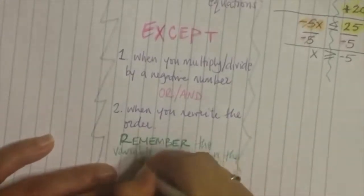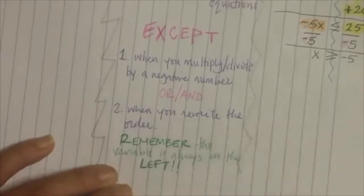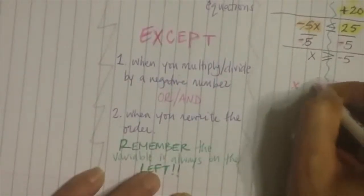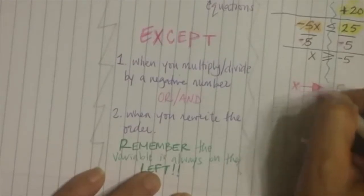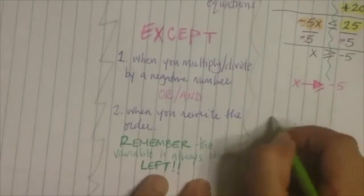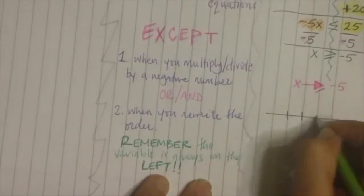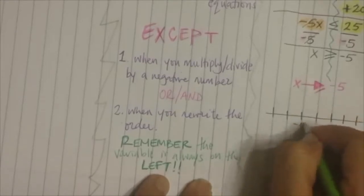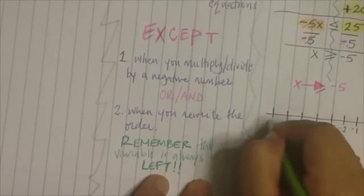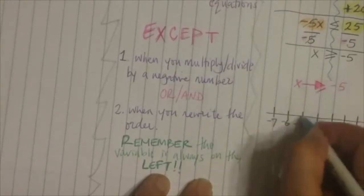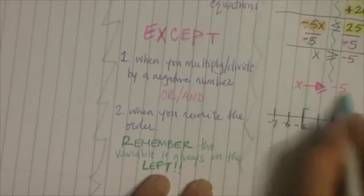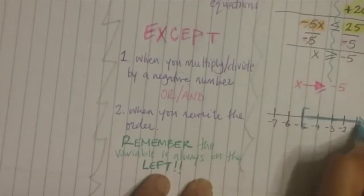Remember, the variable must always be on the left hand side. We have x is greater than or equal to negative 5 — draw an arrow going to the right. When you graph this, the arrow goes to the right. It's going to be a closed circle, and I'm going to use brackets. So it's a bracket starting at negative 5 going to the right, all the way to infinity.